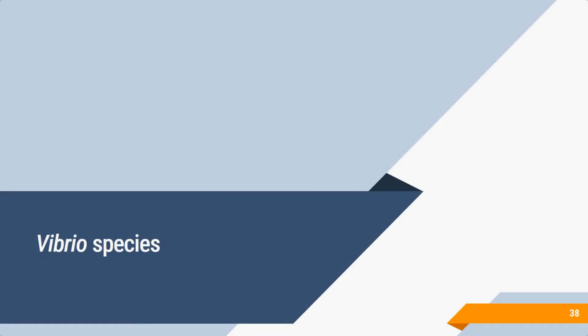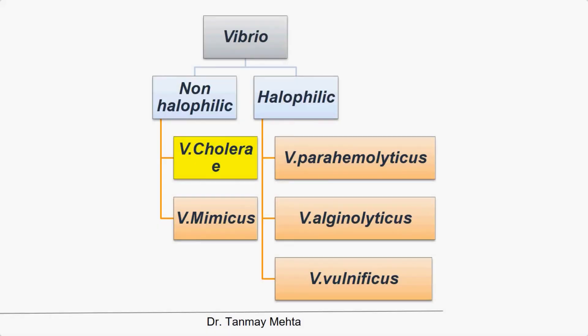Moving to non-Enterobacteriaceae gram-negative bacilli, the most important are Vibrio species. They are divided into non-halophilic — Vibrio cholerae and V. mimicus, which do not require salt — and halophilic species — V. parahaemolyticus, V. alginolyticus, and V. vulnificus — which can tolerate higher sodium chloride concentrations.